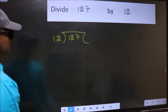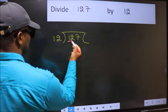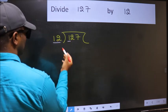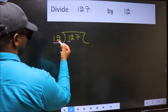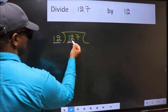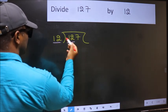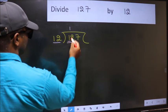Next. Here we have 1 and here 12. 1 is smaller than 12. So we should take 2 numbers 12. When do we get 12 in 12 table? 12 once 12.